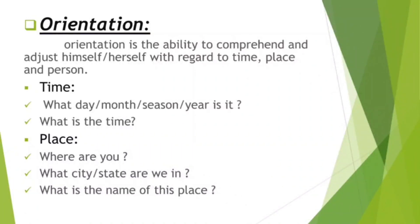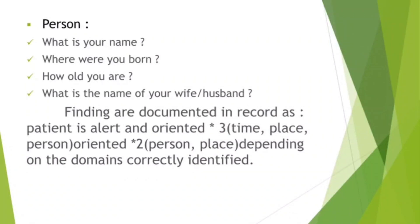Orientation is the ability to comprehend and adjust oneself with regard to time, place, and person. Time: what day, month, season, or year is it? What is the time? Place: where are you? What city or state are we in? What is the name of this place? Person: what is your name? Where were you born? How old are you? What is the name of your wife or husband? Findings are documented as: patient is alert and oriented times 3, which is time, place, and person; or oriented times 2 — person and place — depending on the domains correctly identified.